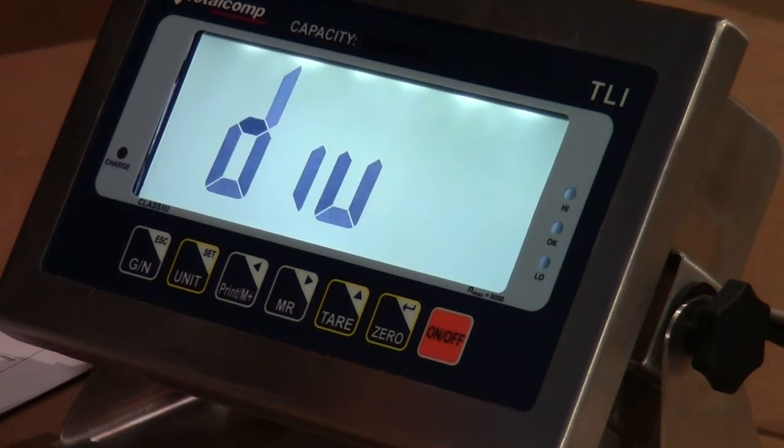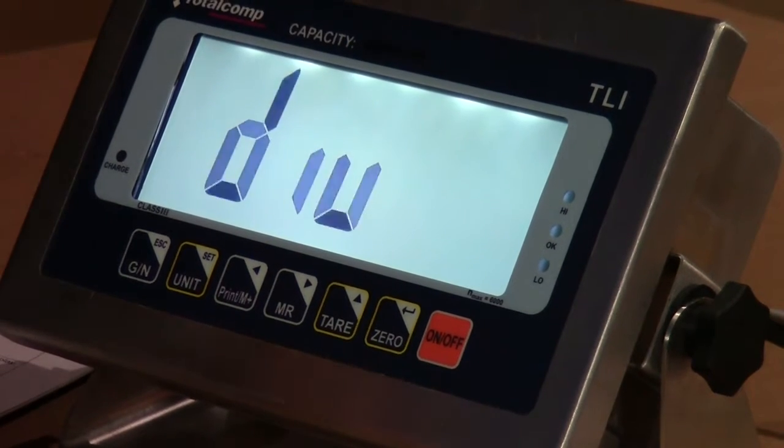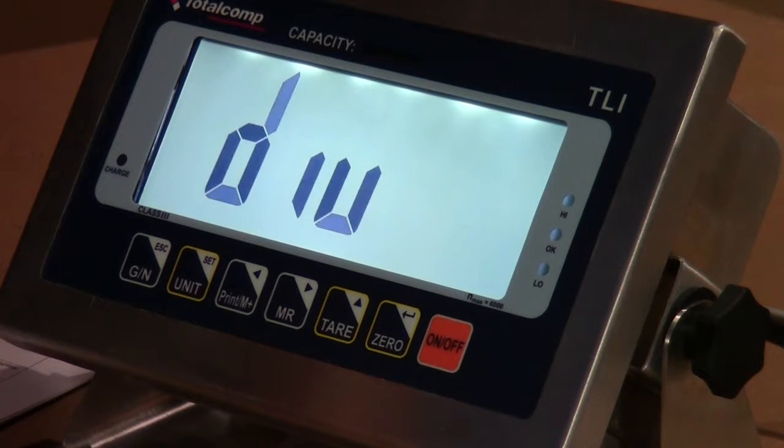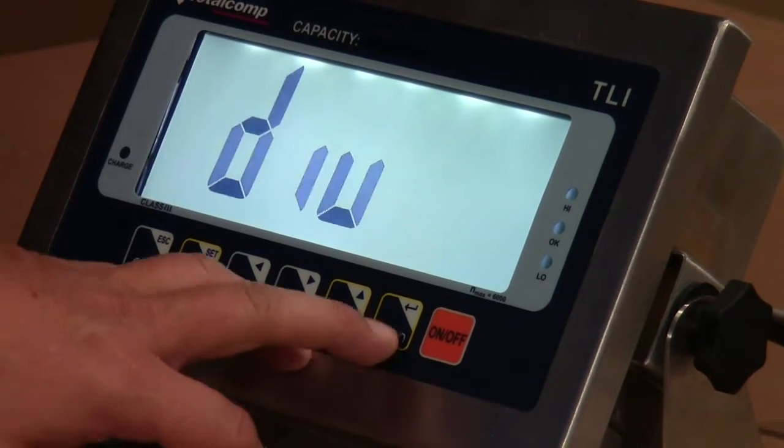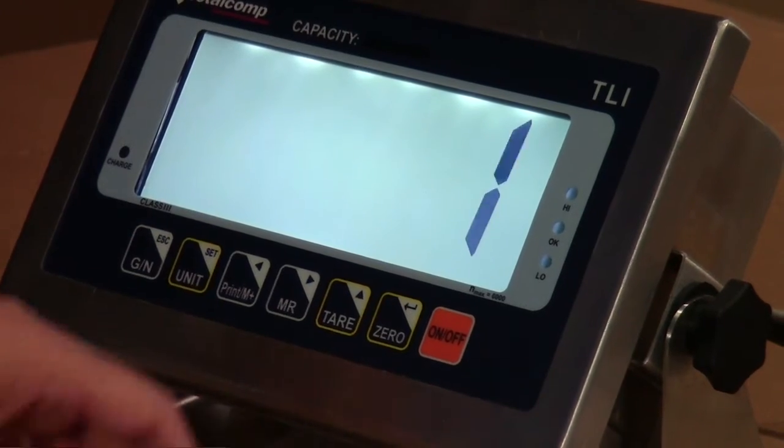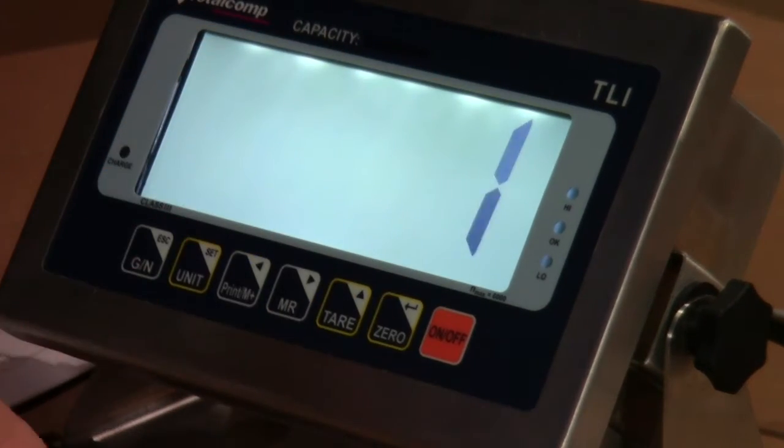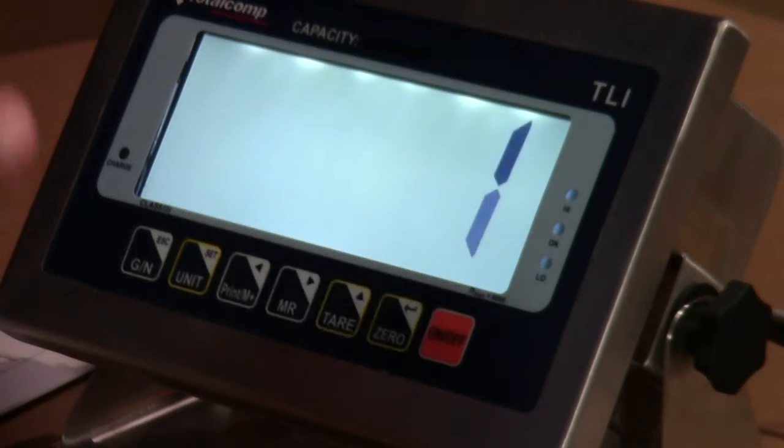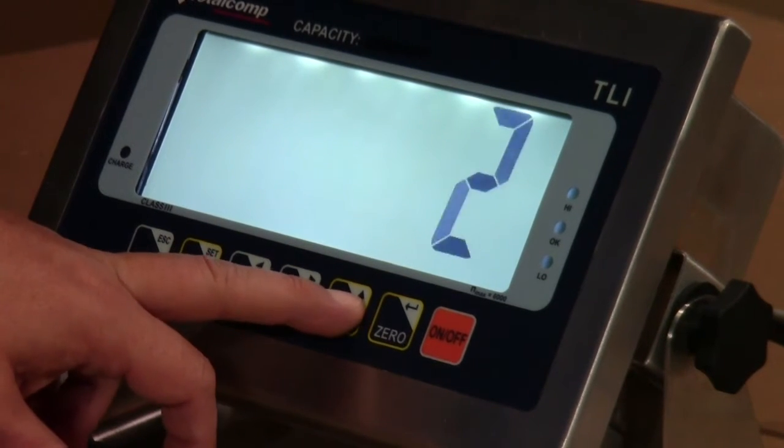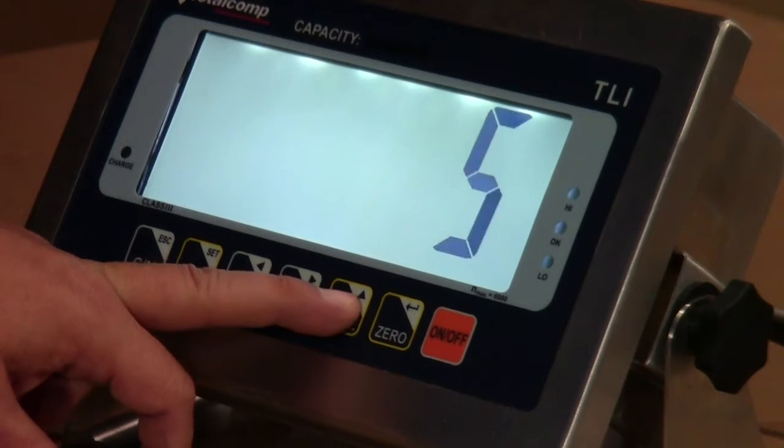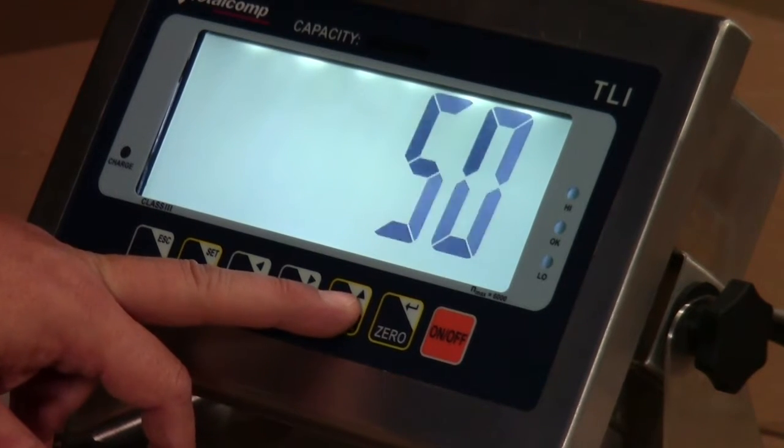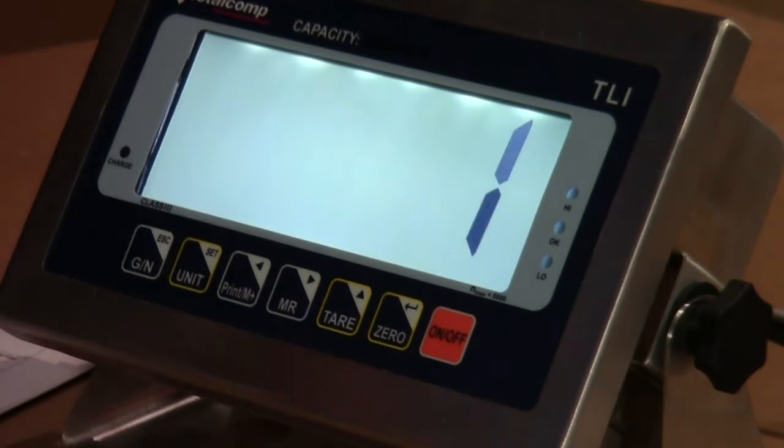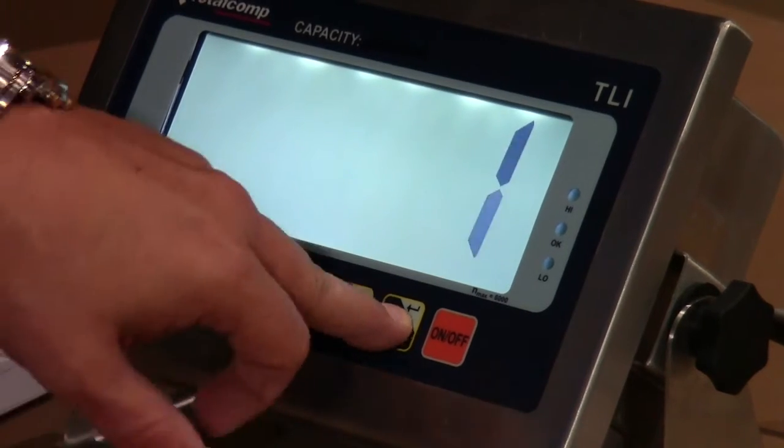The second that we could set is the division. We are able to set the parameter, how accurate we want the scale to count up in graduations. We would like to have 1 pound, so we go up by 1 pound. If we want to go up by 2 pounds, we could do that 5, 10, 20, or 50 pounds. We are at 1 pound, so we hit enter again.